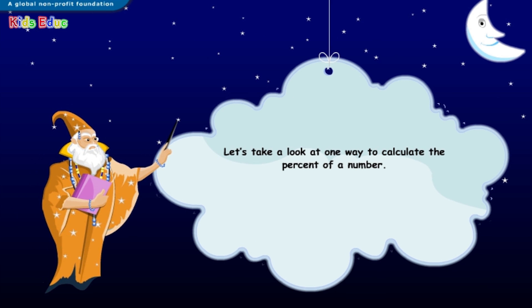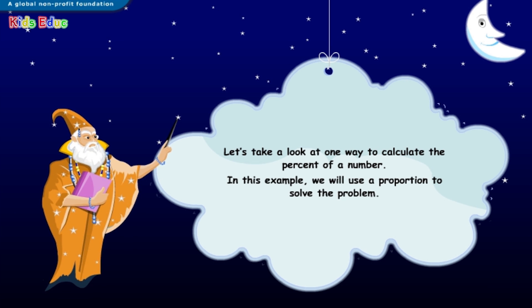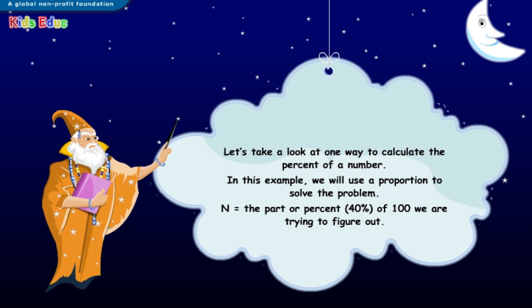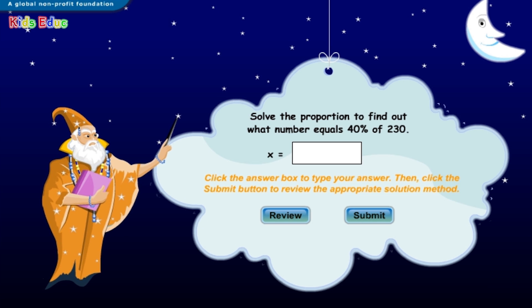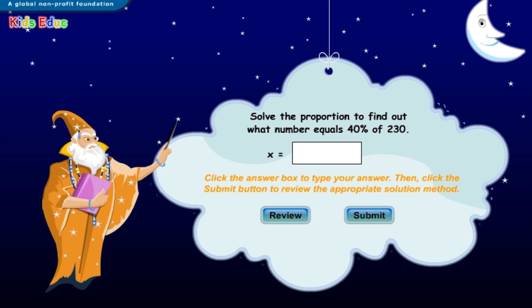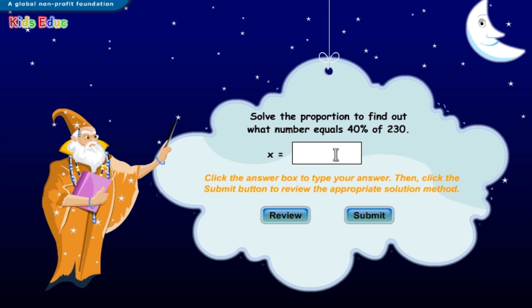Let's take a look at one way to calculate the percent of a number. In this example, we will use a proportion to solve the problem. N is the part or percent — that is, forty percent of a hundred we are trying to figure out. X is the number we are trying to find, and W is the whole number, or two hundred and thirty. We are trying to find the percent of. Solve the proportion to find out what number equals forty percent of two hundred and thirty. The answer is ninety-two.